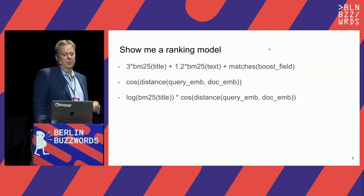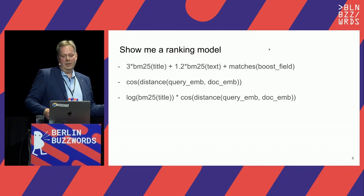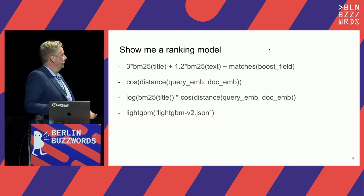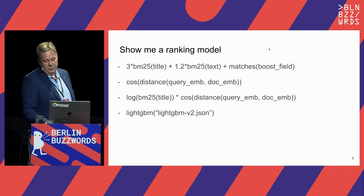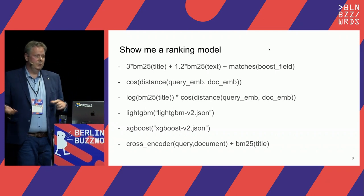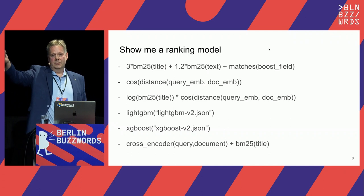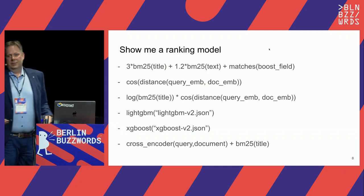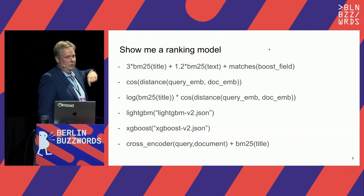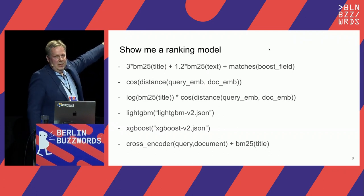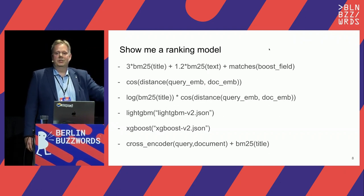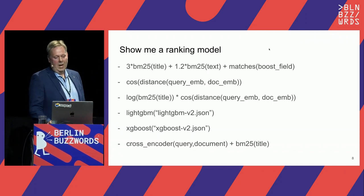Another example is to combine different techniques, which is also a ranking model. LightGBM is a gradient boosted tree family ranking method popular in e-commerce. XGBoost is another example. Cross encoders, also based on transformer architectures, input both the query and the document at the same time and then predict a score. So all of these are examples of ranking models. Some of these can have millions or billions of parameters that we can train to adapt to our ranking case.